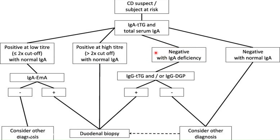In the third scenario, where IgA TTG antibodies are negative but total IgA is deficient, go for IgG TTG antibodies or IgG DGP antibodies. If they are positive, go for duodenal biopsy. If they are negative, consider other diagnoses.